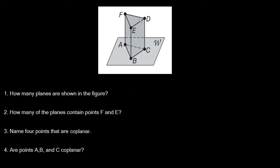Here's our last problem, and we're working with a new figure this time — it basically looks like a Toblerone, which is technically called a triangular prism. The first question asks how many planes are shown in the figure. Just count up the sides of the prism: there's the bottom (plane W), then two slanted sides, then the back, and finally the top. So we have five planes total.